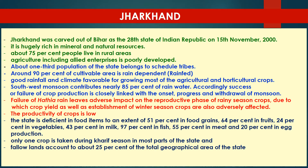Accordingly, success or failure of crop production is closely linked with the onset, progress, and withdrawal of monsoon. Failure of rains leaves adverse impact on the reproductive phase of rainy season crops, due to which crop yield as well as establishment of winter season crops are also adversely affected. The productivity of crops is low in Jharkhand.